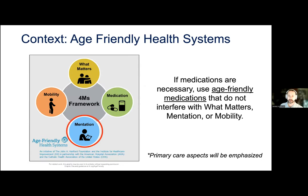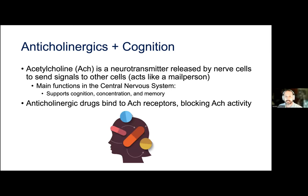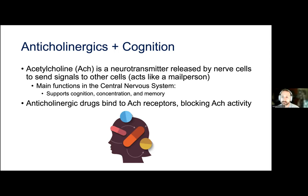Coming back to the 4Ms framework, let's focus on mentation, which is of course a main focus in ADRD. We'll focus today on anticholinergics and benzodiazepines. Acetylcholine is a neurotransmitter released by nerve cells that sends signals to other cells, acting like a mail delivery person. Its main functions in the central nervous system are related to cognition, concentration, and memory. When someone takes an anticholinergic medication, the drug binds to acetylcholine receptors, blocking its activity. This can cause side effects, one of which is impaired cognition.